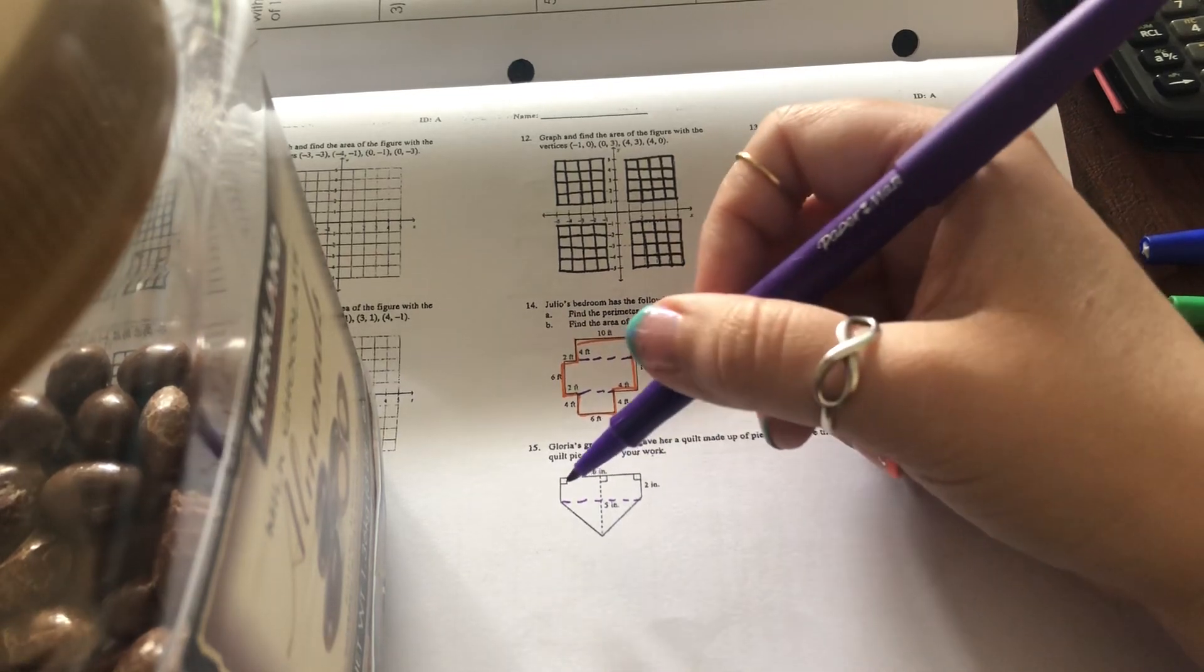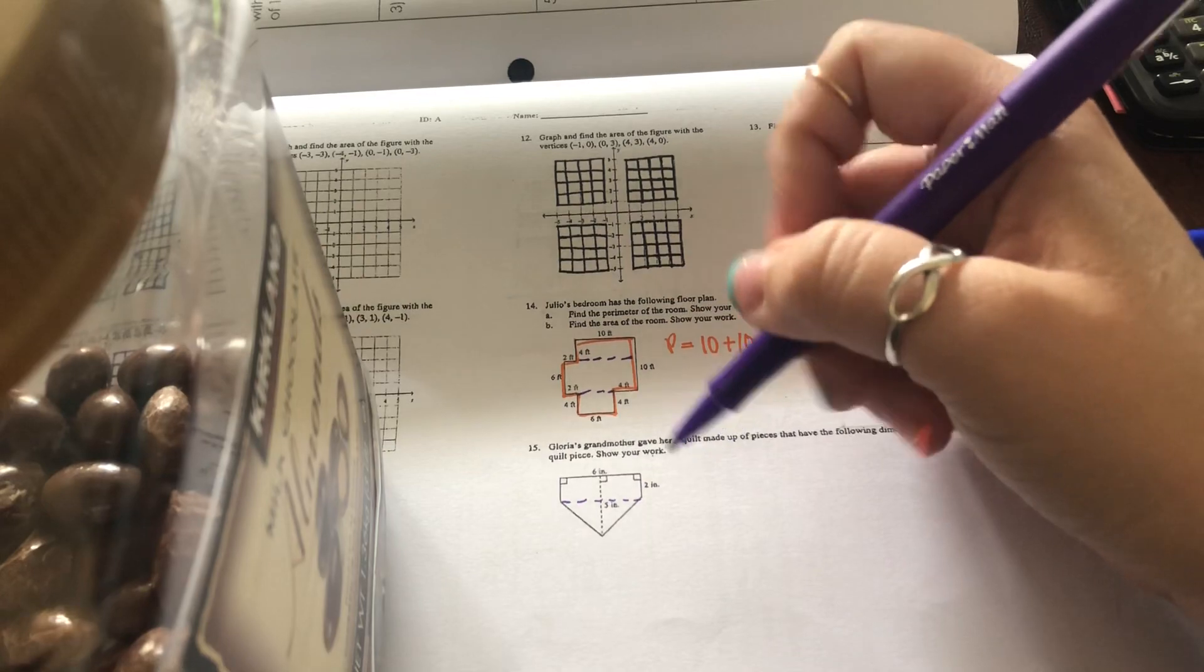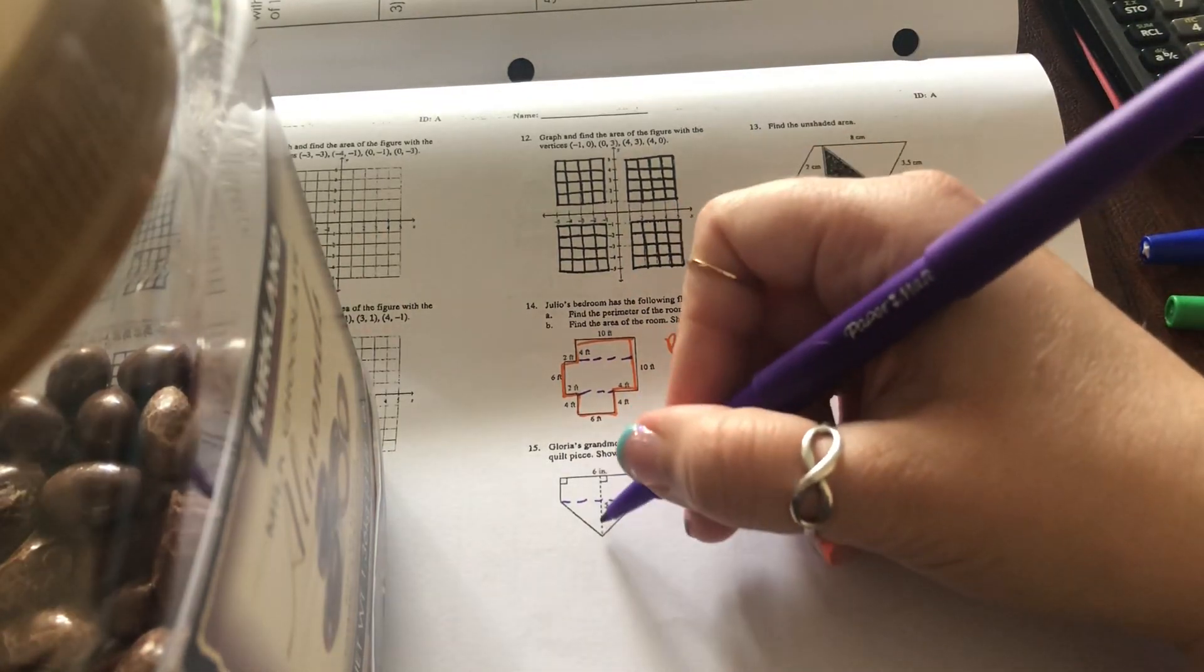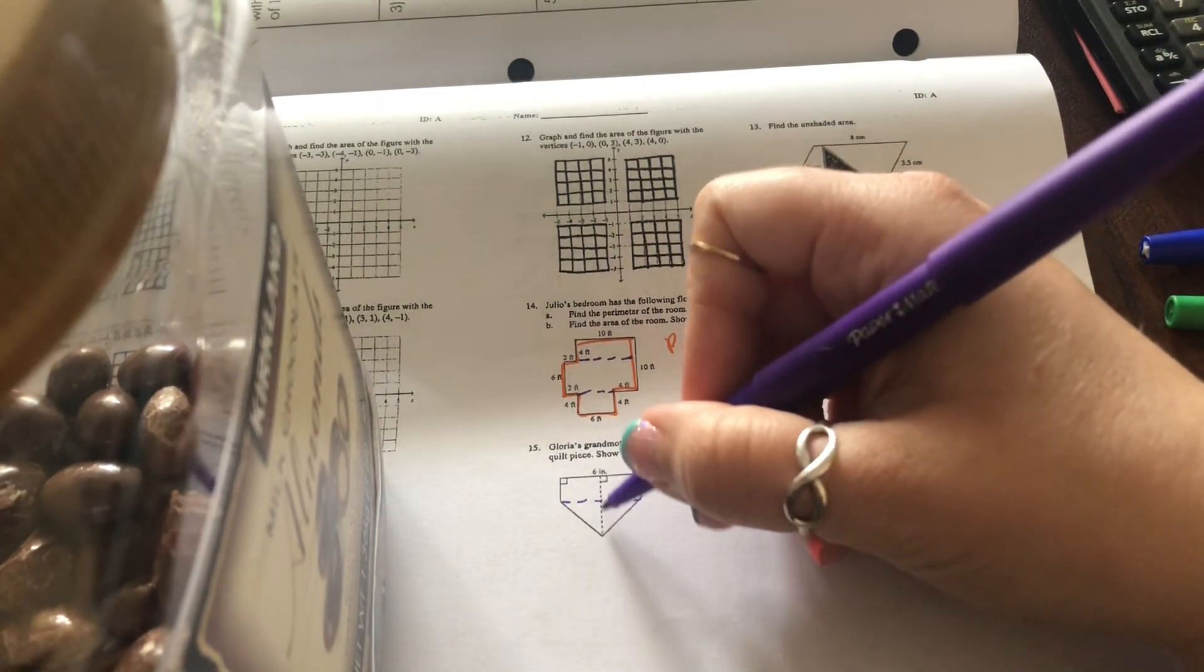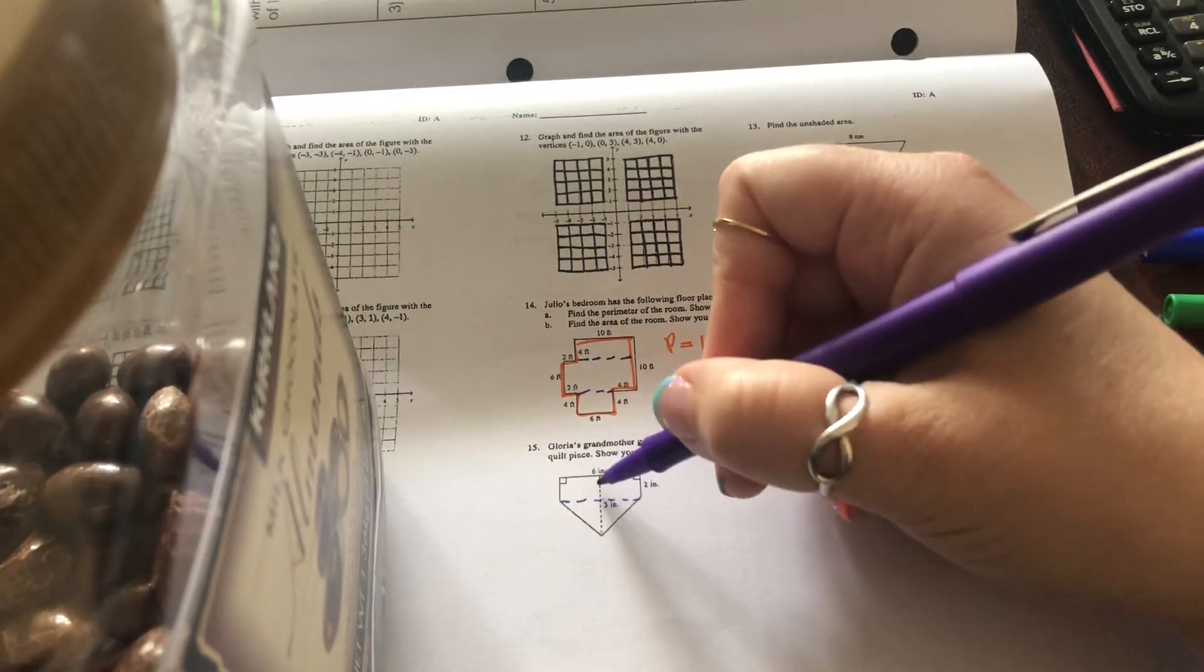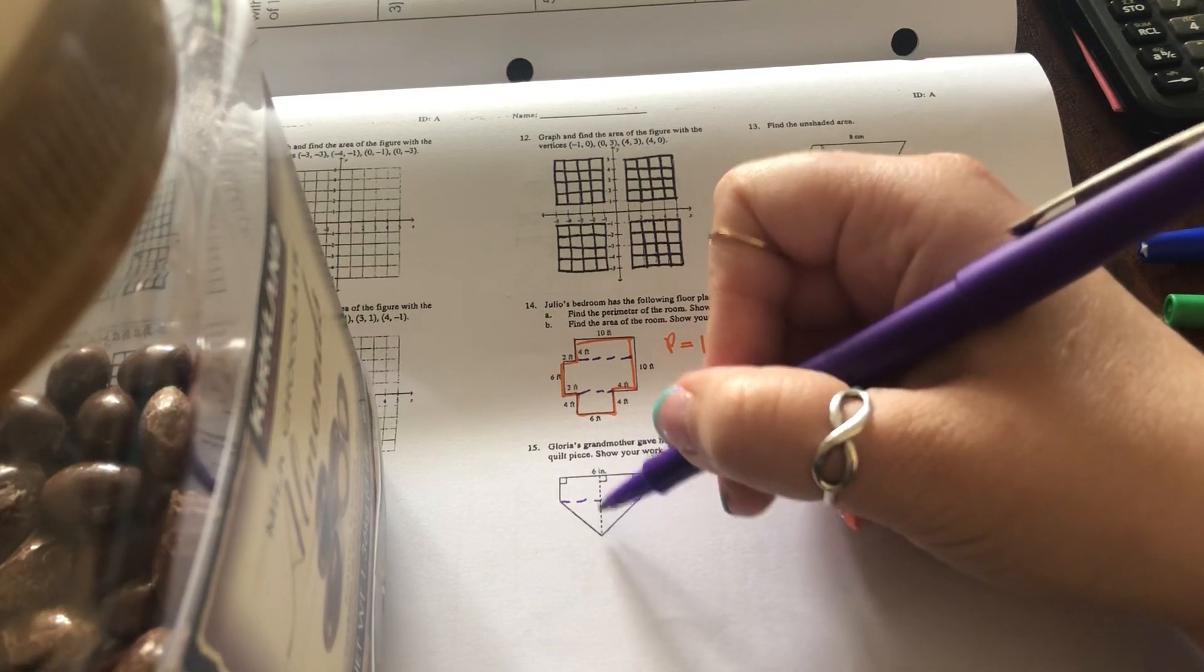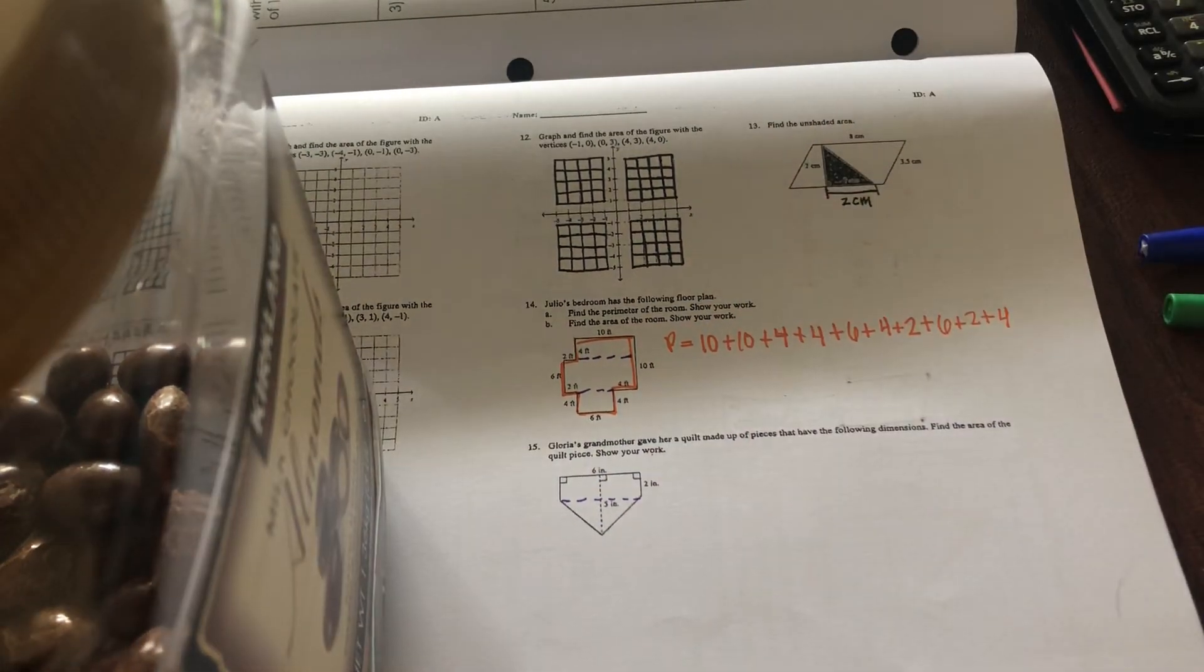For that triangle, you know the base, the base is six, but what's the height? Well, if this whole side is five and from here to here is two, what's this missing piece? That's my hint to you. If this is five and from here to here is two, two plus what makes five? That would tell you the height. And then your base is the same as this.